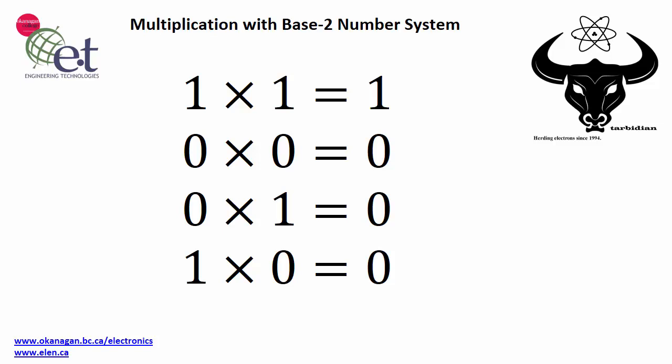If you can do multiplication in the base ten number system, you should have no trouble at all with the base two number system. Because there's only two digits, two bits, in the base two number system — ones and zeros. So if you know how to multiply one times one equals one, zero times zero equals zero, zero times one equals zero, and one times zero equals zero, then you should have no trouble doing multiplication with the base two number system.